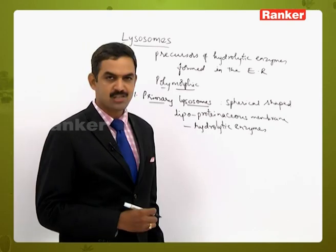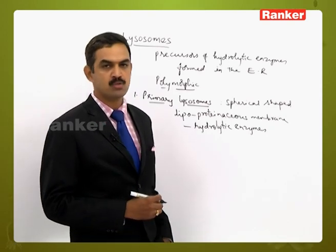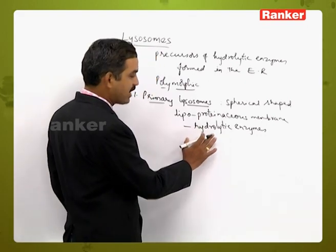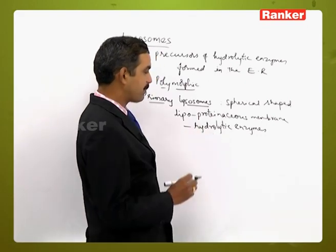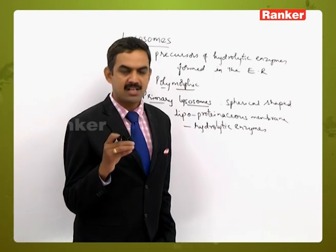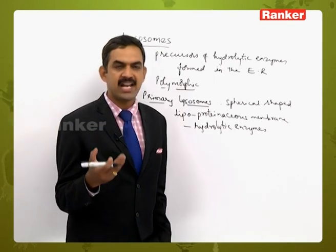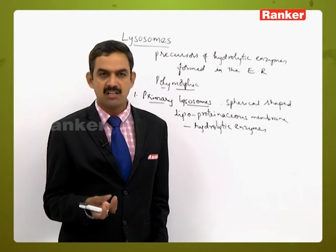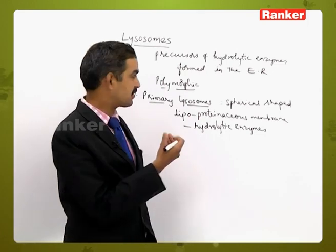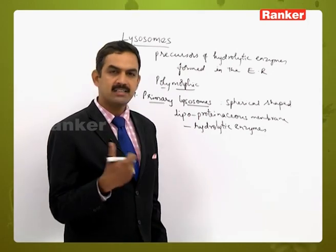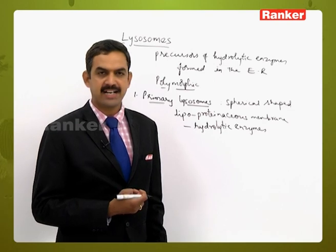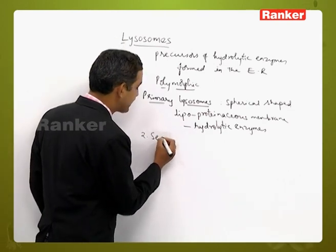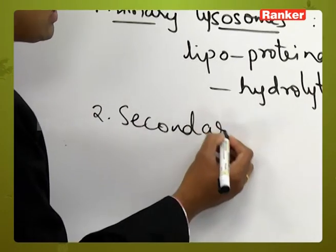Primary lysosomes are formed towards the Golgi vacuolar maturation side — some of the Golgi vacuoles are converted into lysosomes. The hydrolytic enzymes present inside primary lysosomes are very active. As and when any food material or foreign particle enters the lysosome, the activity of the hydrolytic enzymes starts, and the primary lysosome is then converted into a secondary lysosome.